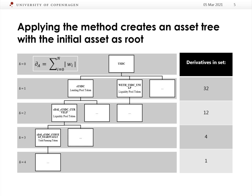Applying this algorithm results in an asset tree where the initial token is the root. For 2020 we found 35 assets of distance 1, 12 assets of distance 2, 4 assets of distance 3, and one asset of distance 4 for USDC. The full tree and all found ERC-20 derivatives can be seen in the written proceedings.